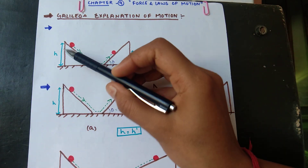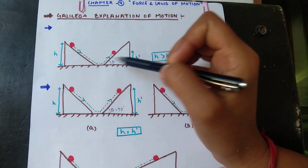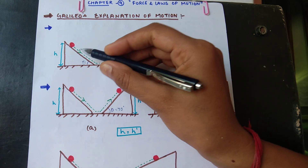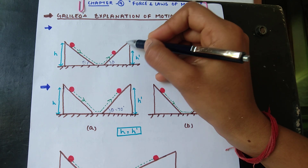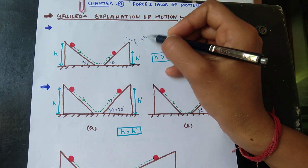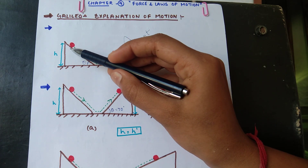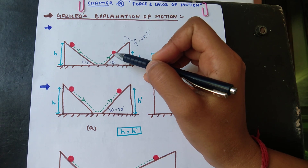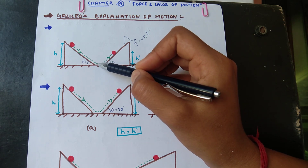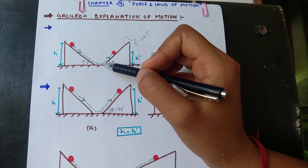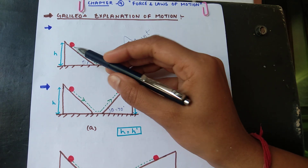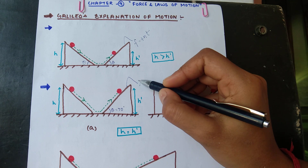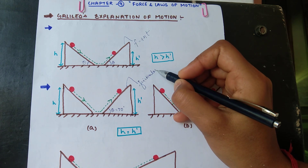Here we discuss Galileo's experiment. First, he took two inclined surfaces at the same angle, but both surfaces had friction present. When he dropped a ball from one side, the ball went to the other side but its height continuously reduced, and at last it came to rest — because friction was present, and we know friction is responsible for stopping an object.